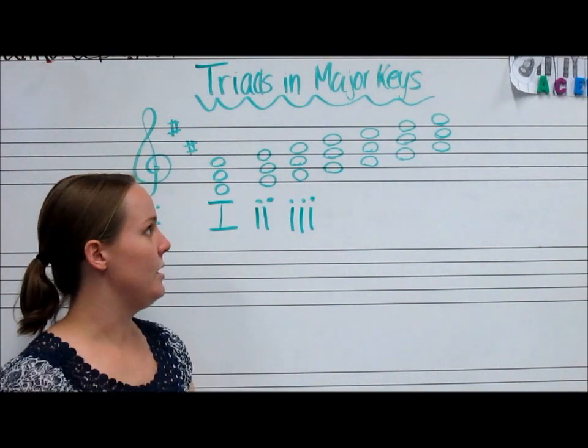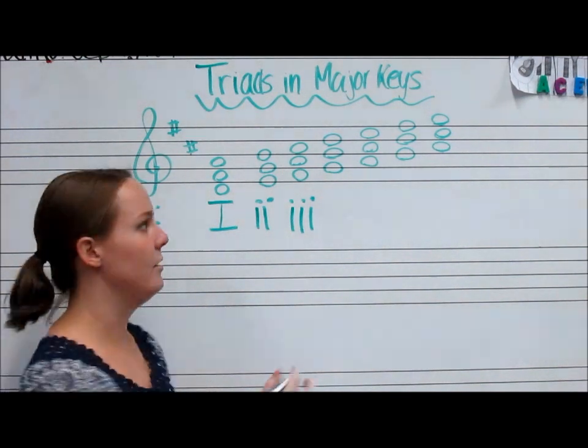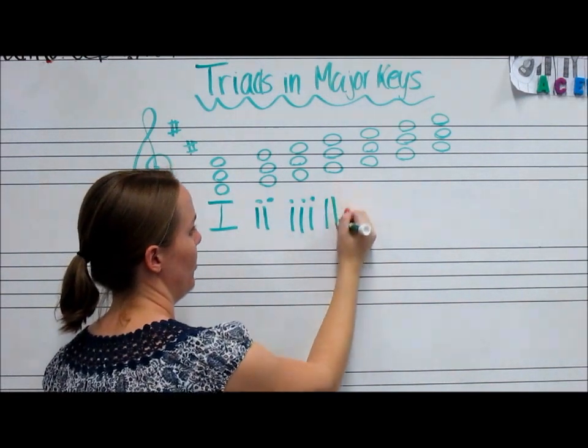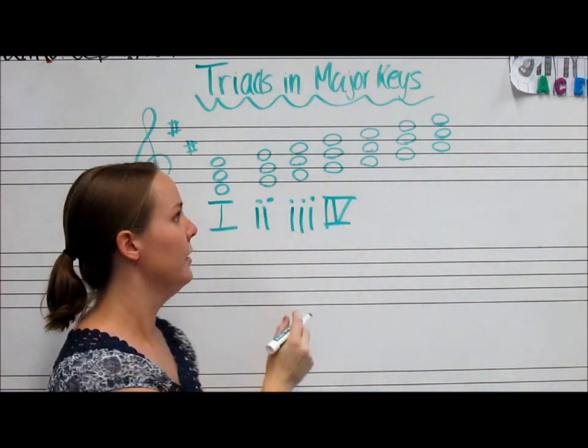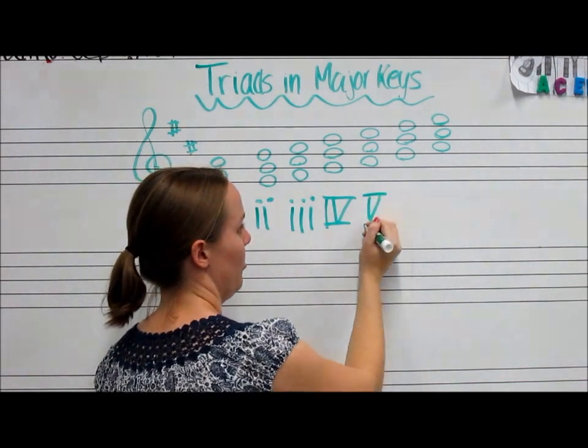We have G, B, D, which is a major triad. So it's capital Roman numeral IV. A, C sharp, E is Roman numeral V, capital.